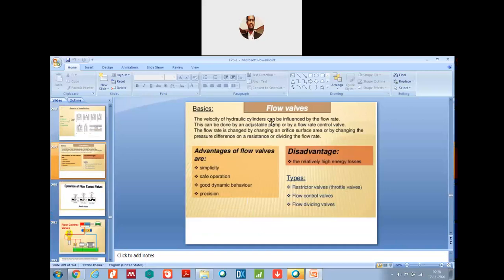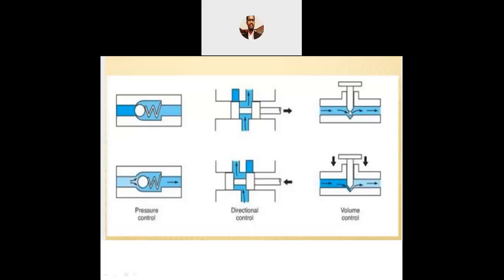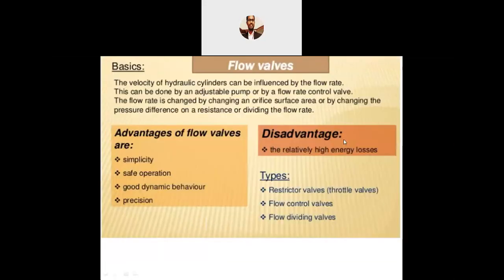Now let us discuss flow control valves. The velocity of hydraulic cylinders can be influenced by the flow rate. For example, in a JCB, the arm speed with which it retracts and extends depends upon the flow control valves. This can be done by adjustable pumps or by flow rate control valves. The flow rate is changed by changing the orifice surface area, by changing the pressure difference, or by dividing the flow. Changing the orifice surface area means changing this orifice area — by doing so, you can control the flow.